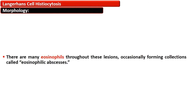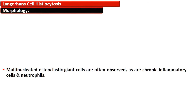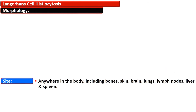There is a collection of eosinophils, and sometimes this collection is very large in number, forming eosinophilic abscesses. Multinucleated osteoclastic giant cells are also observed, along with chronic inflammatory cells and neutrophils.